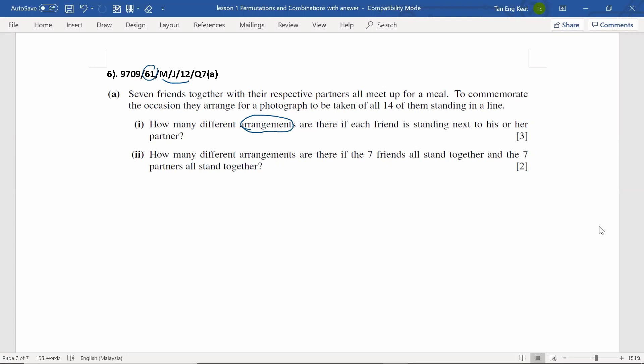Now, let's say we use letters to represent these friends. To answer part one. According to the questions, each friend is standing next to his or her partner. That's why we will circle them. Okay. Now, effectively, they are one, two, three, four, five, six, seven. There are seven groups of friends to be arranged in a line for the photograph.